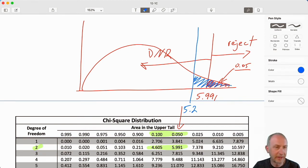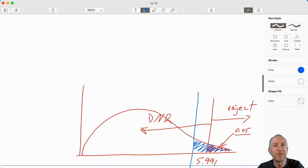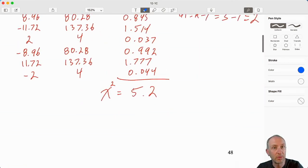My test statistic here was 5.2. So certainly, if this region is equal to 0.05, well, this region is greater than 0.05. And that's confirmed here. When I see that my test statistic lies between those two values, my p-value is between 0.05 and 0.1.